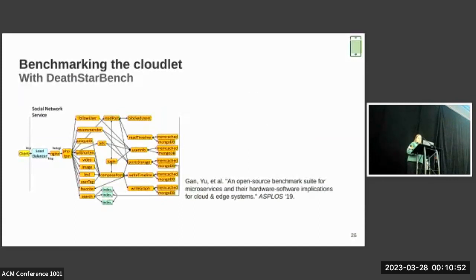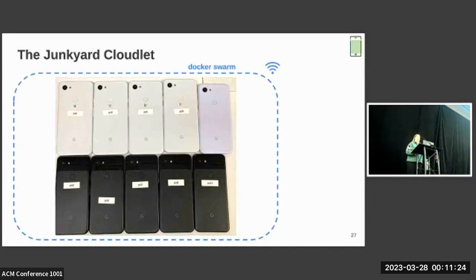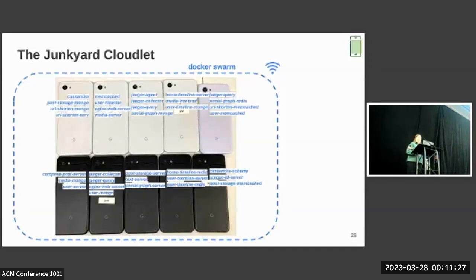Let's talk about those applications. We benchmark our phone cloudlet using Death Star Bench, which is an open source microservice-based benchmarking suite. If you're not familiar with the microservice programming model, I put a diagram up here from the Death Star paper, and this is just showing you how you can break a large end-to-end application, in this case a social network, into component pieces, which are those modular microservices. Each microservice can be deployed all on the same device or across multiple devices, which makes it a good fit for our smartphone cluster. So we take our 10 phones, we connect them in a Docker swarm over Wi-Fi, and then we deploy these microservice-based applications across the cluster. Each phone ends up hosting three or four of those microservices.